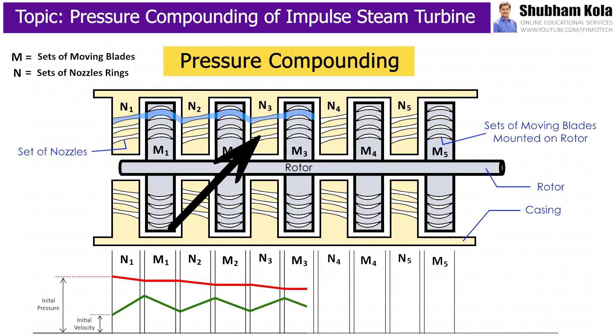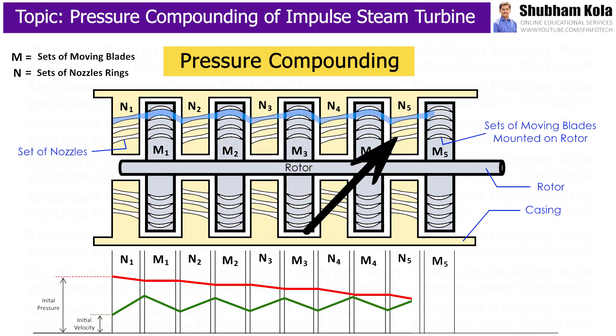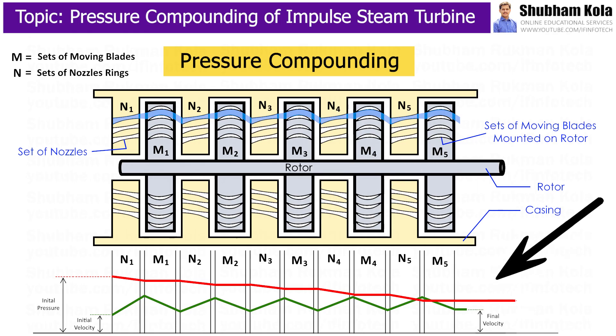In this manner, pressure of steam is partly utilized in each stage until the pressure of steam is reduced to condenser pressure.